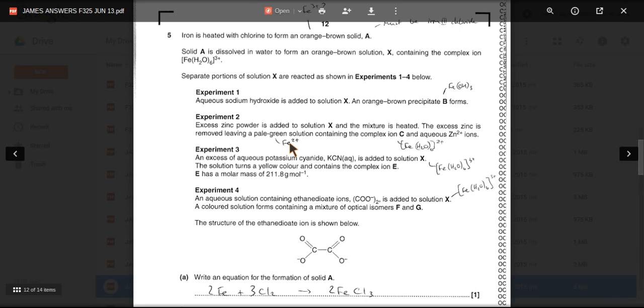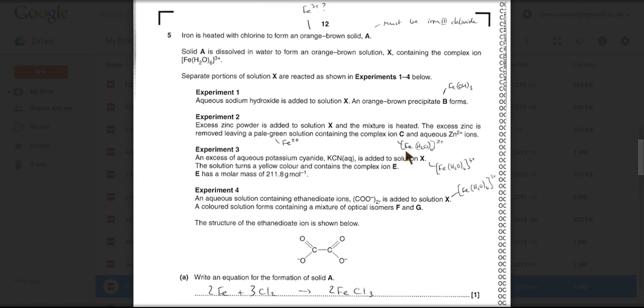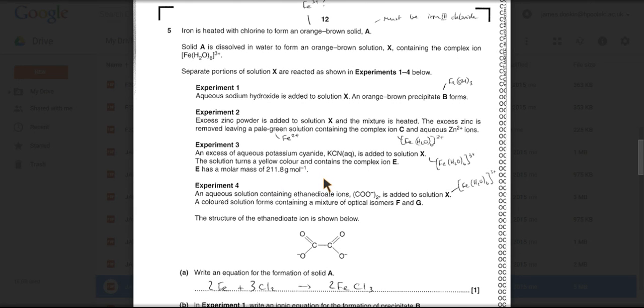So the ion's gone down to the +2 oxidation state containing the complex ion C, so that's going to be iron with six waters in the 2+ state. Excess aqueous potassium cyanide KCN is added to solution X, it turns yellow, so yellow implies it's still in the 3+ state. We've got this Mr, I'll come on to that part of the question.